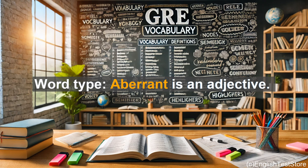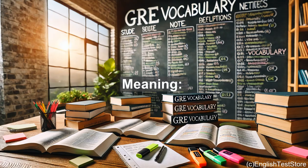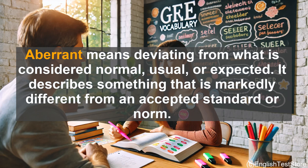Word type: aberrant is an adjective. Meaning: aberrant means deviating from what is considered normal, usual, or expected. It describes something that is markedly different from an accepted standard or norm.